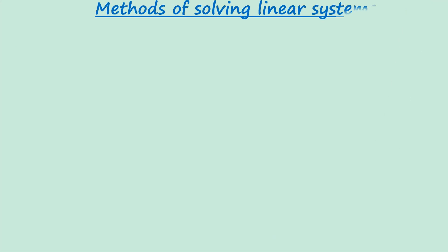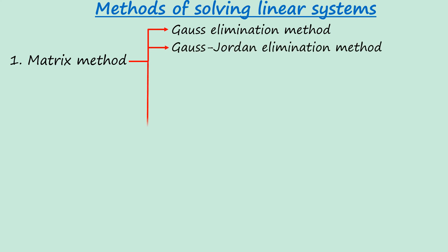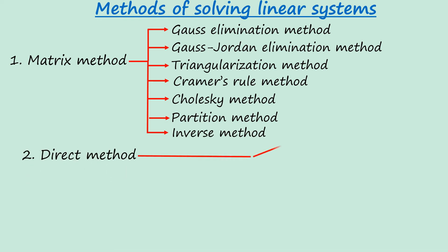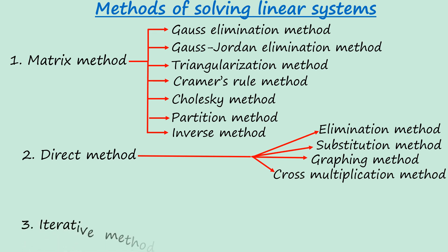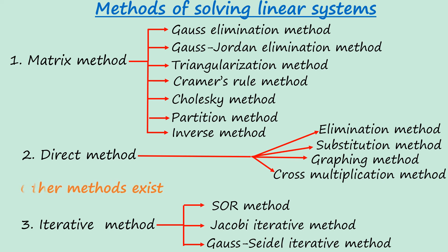Several methods exist for solving linear systems. Under the matrix method, we have the Gauss elimination method, the Gauss-Jordan elimination method, the triangularization method, the Cramer's rule method, the Cholesky method, the partition method, and the inverse method. Under direct methods, we have the elimination method, the substitution method, the graphical method, and the cross-multiplication method. We also have iterative methods such as the SOR method, the Jacobi iterative method, and the Gauss-Seidel iterative method. There are other methods not mentioned in this video.